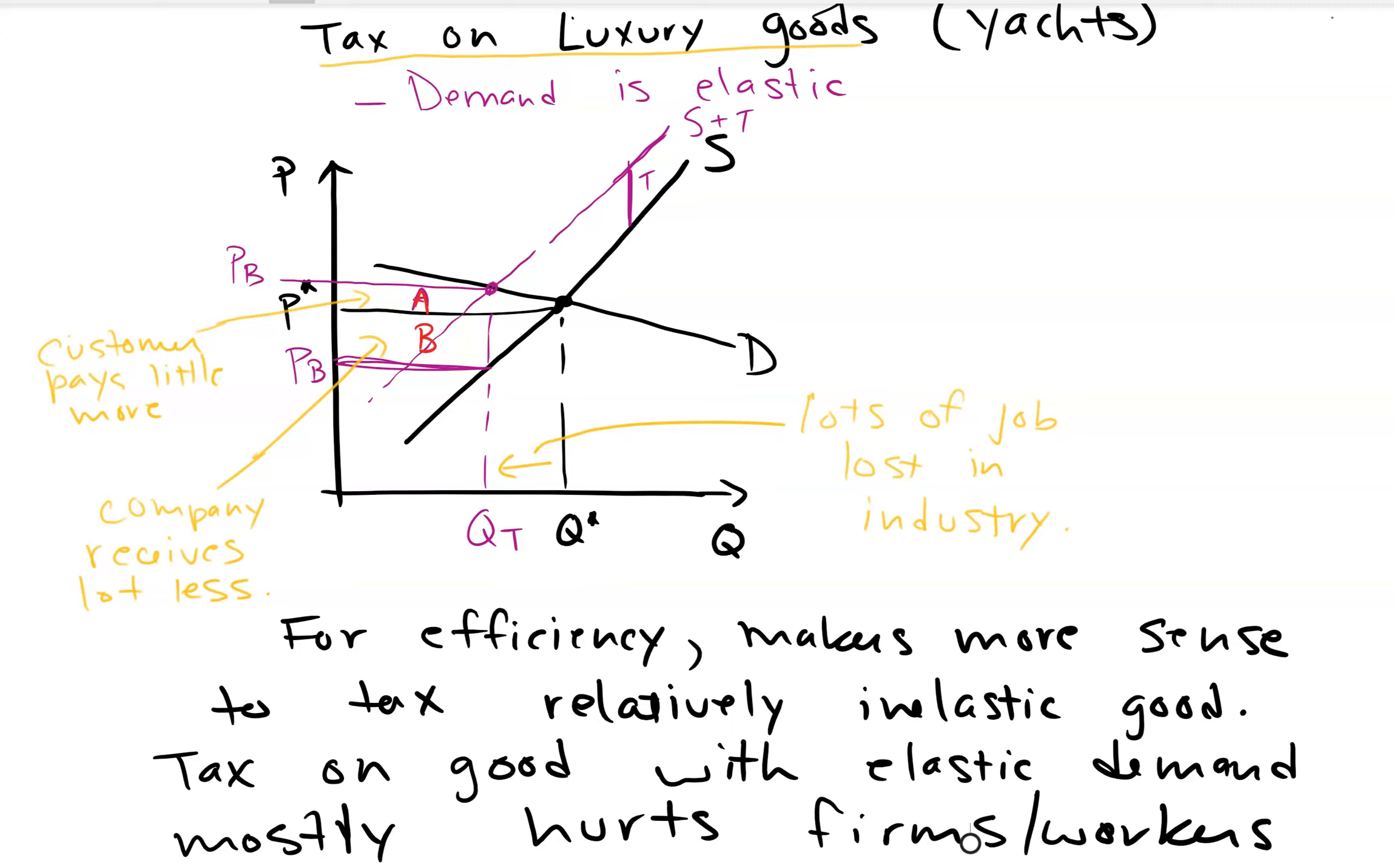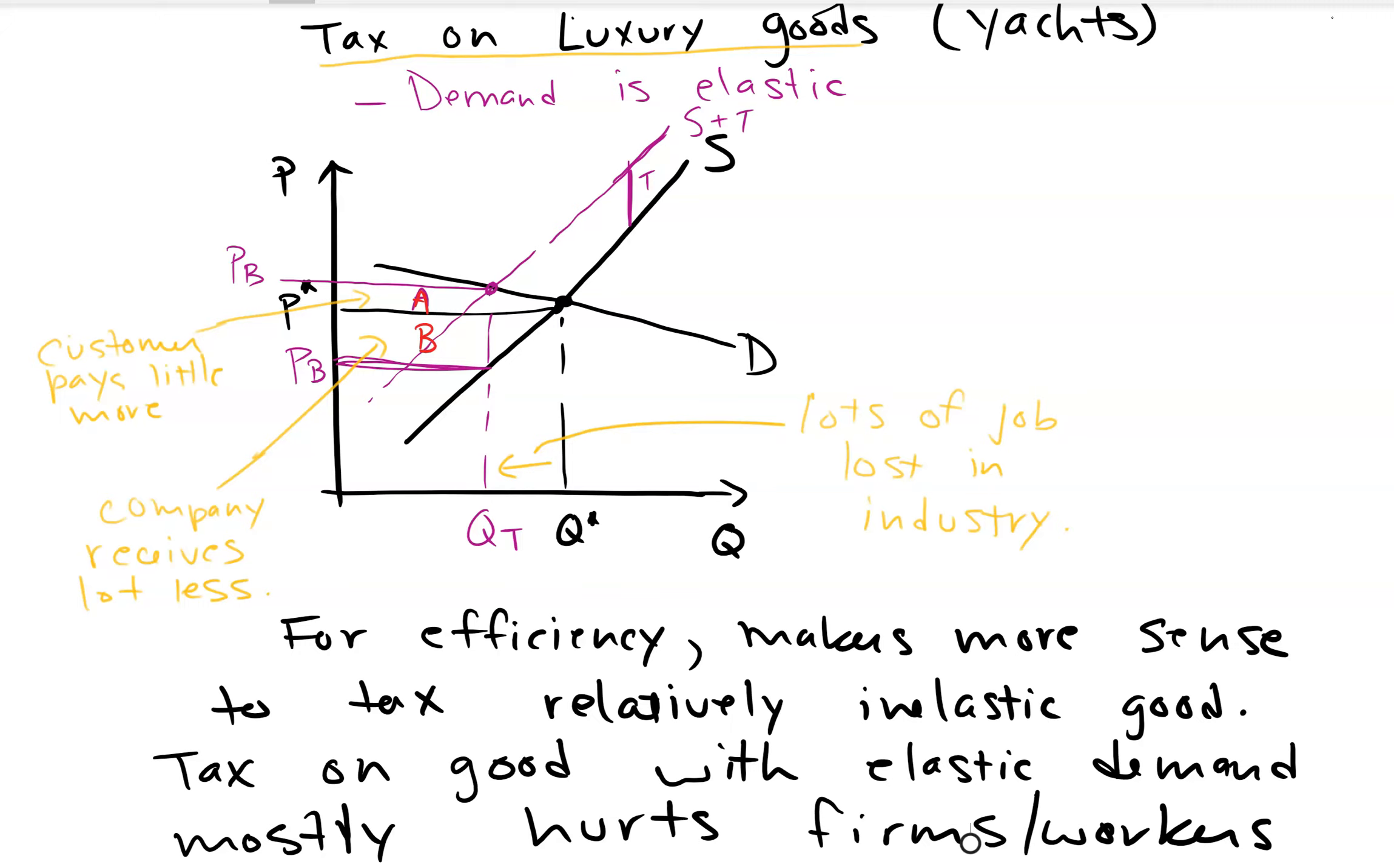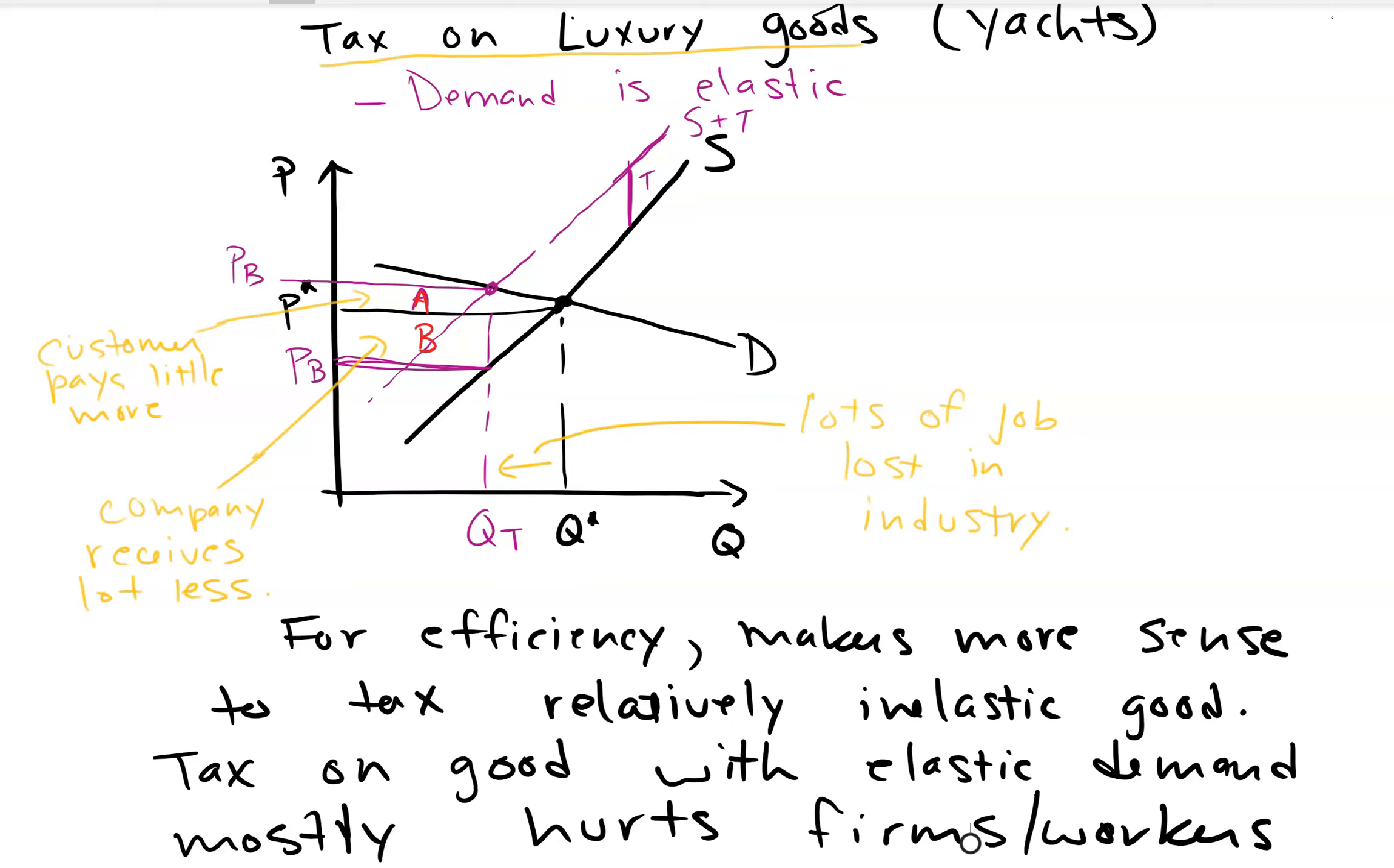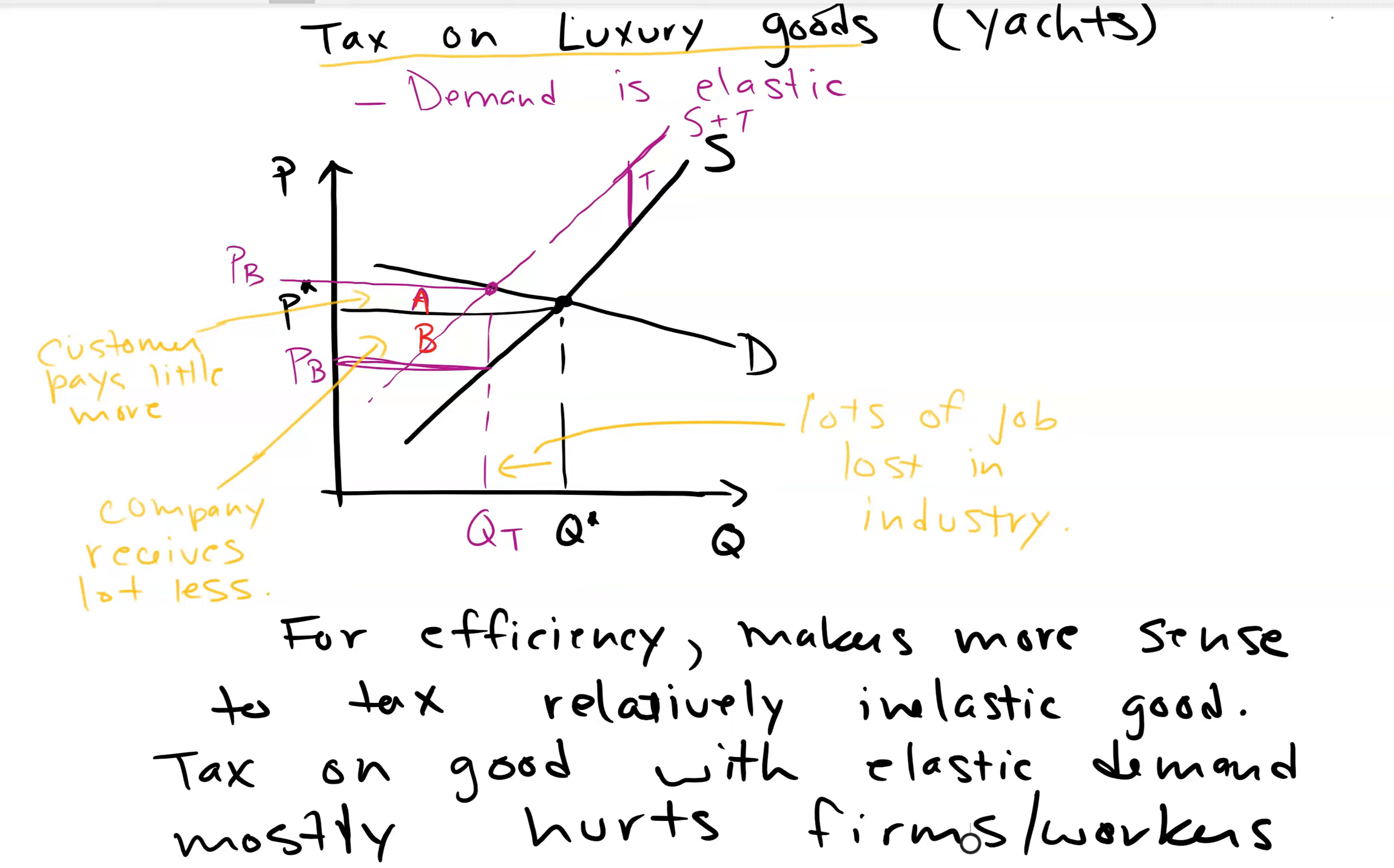So this kind of leads us to a conclusion here. For efficiency purposes, meaning not hurting the economy, it makes more sense to tax a relatively inelastic good, especially relatively inelastic demand. And if you put a tax on a good with elastic demand, then you kill the market. This mostly hurts firms and workers that produce the good, because it's going to lower the quantity and lowering the quantity is going to lose jobs. They're going to lose profit. So this is kind of counterintuitive. Luxury taxes are very popular in most countries, they're very politically popular.